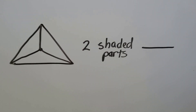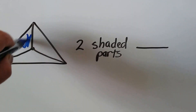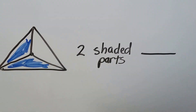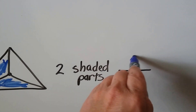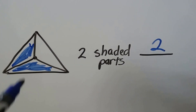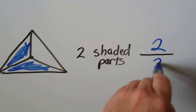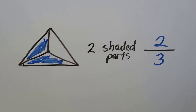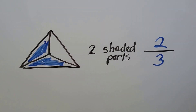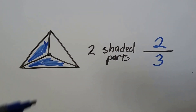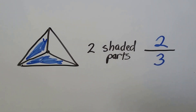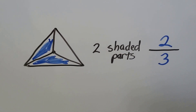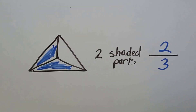Let's try this one. There's supposed to be two shaded parts, so we can shade two of the parts: one, two. There's two shaded parts. And how many equal parts are there? One, two, three. So two-thirds of this triangle is shaded. Can you see how much is not shaded? What part is still white? Well, there's three equal parts and one part is not shaded, so one-third is not shaded. Two-thirds is shaded and one-third is not shaded.